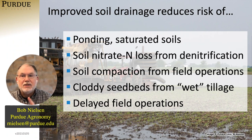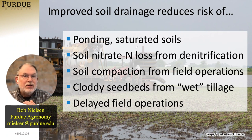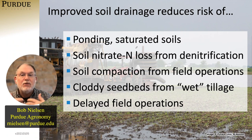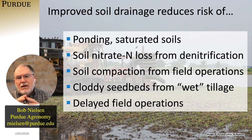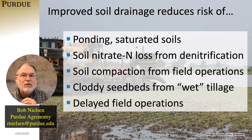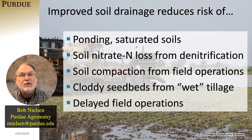Improving soil drainage also reduces the risk of creating soil compaction from all sorts of field operations — from tillage to planters, to combines, to grain carts. If soils are poorly drained, there are fewer days where the soils are fit to be on in terms of soil moisture, which increases the odds of creating compaction. Improving soil drainage will also reduce the risk of creating cloddy seed beds in the spring, and it reduces the risk of delayed or interrupted field operations. The more working days we can regain through improved soil drainage to improve the timeliness of all field operations, the more that's going to help increase yields.